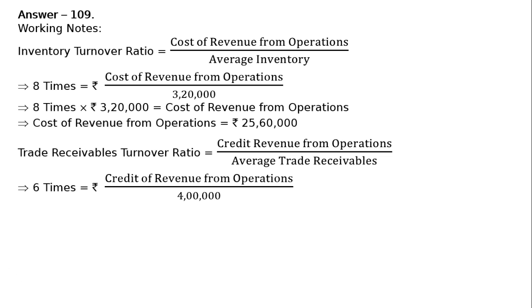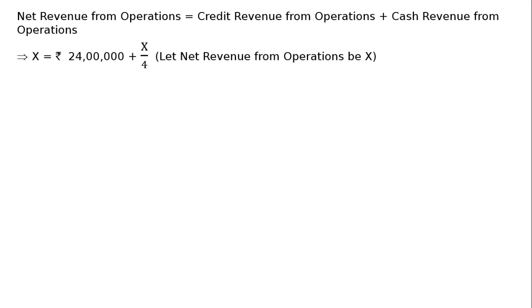We get credit revenue from operations as rupees 24,00,000 by cross multiplying. Then net revenue from operations equals credit revenue from operations plus cash revenue from operations. Let net revenue from operations be X, so X equals credit revenue from operations rupees 24,00,000 plus X by 4.